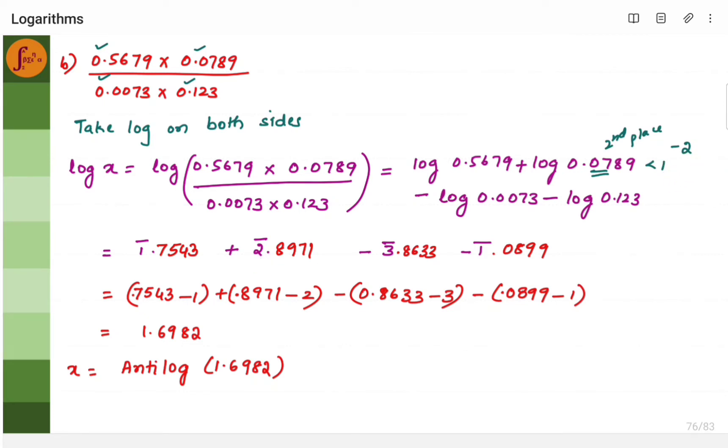So minus 2. And here, in this case, where is a non-zero number? Third place. So it's going to be minus 3. Minus because it's less than 1. So minus 3. So minus 3 here, right? Here also.